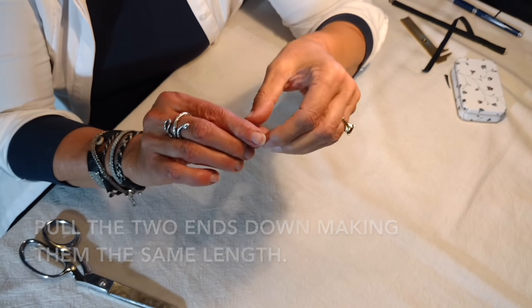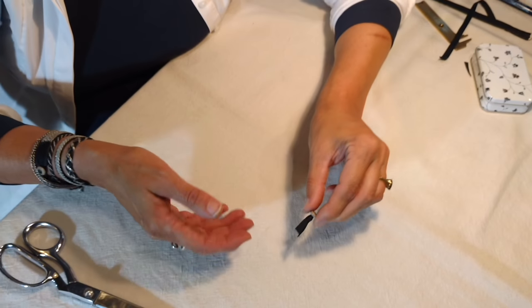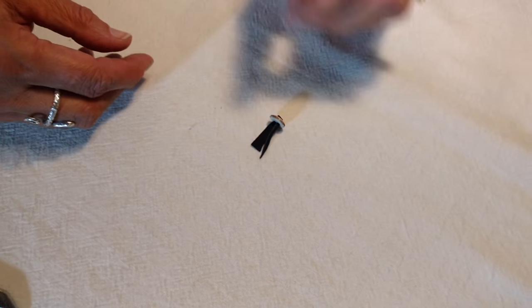Pull the point down so the loop is flush with the top of the button. Both tabs should meet with the suede sides together.